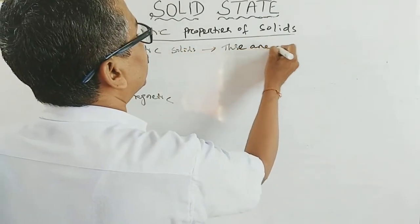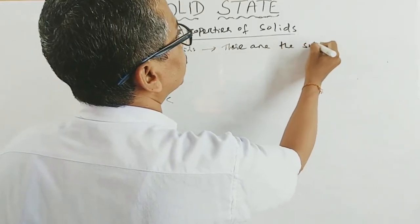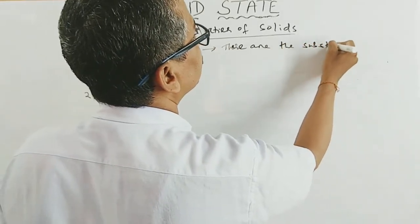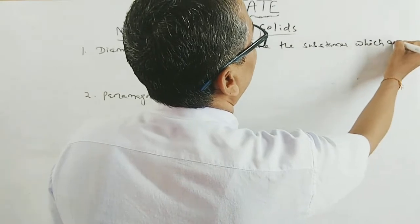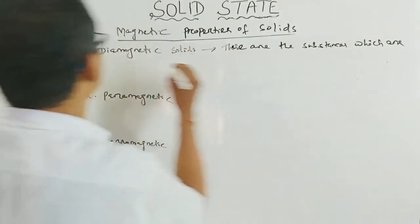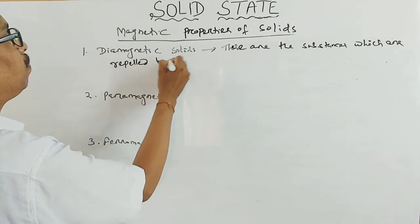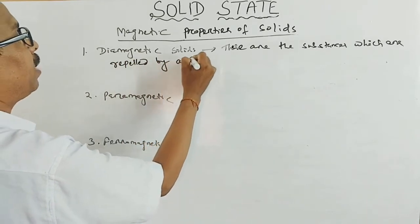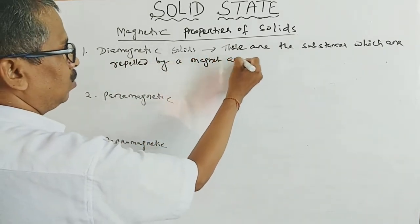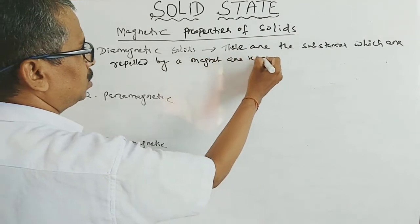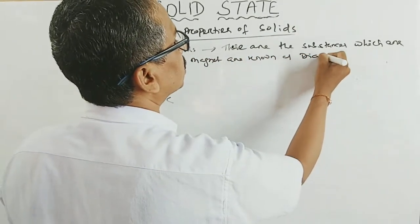These are the substances which are repelled by a magnet, known as diamagnetic substances.